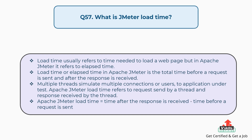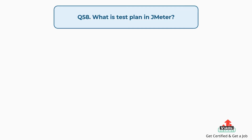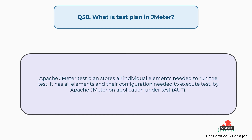Question 57: What is JMeter load time? Load time usually refers to the time needed to load a web page, but in Apache JMeter it refers to elapsed time. Elapsed time is the total time from before a request is sent to after the response is received. Multiple threads simulate multiple connections to the application. JMeter load time = time after response is received minus time before request is sent.